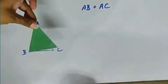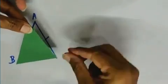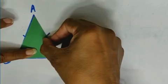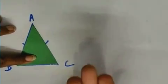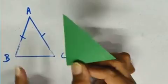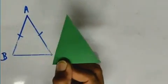Now we will keep the replica upside down and then keep it on the triangle. What are we observing? When we kept the replica upside down, then also it covers the triangle as it is. It means angle C covers angle B and angle B covers angle C.